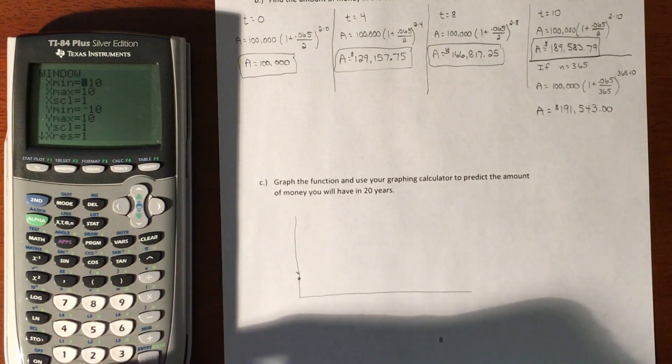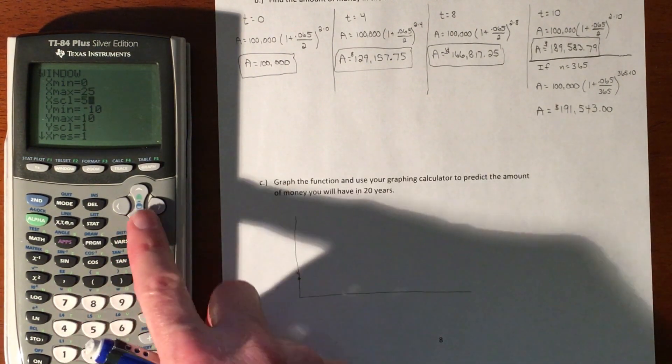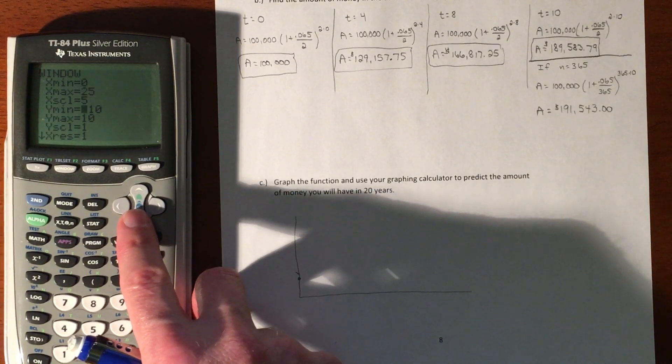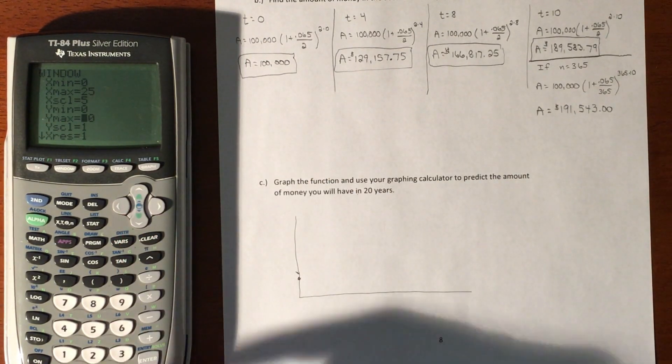We don't need to go negative time. We're going to go to 20 years, so let's go a little bit further and go by fives. We'll start at zero dollars and maybe go to $400,000, going by hundred thousands.